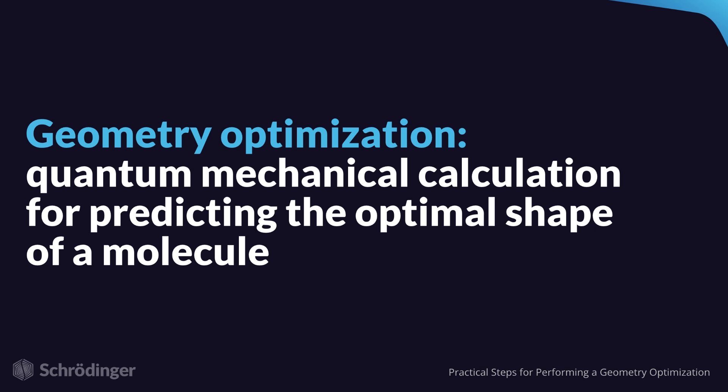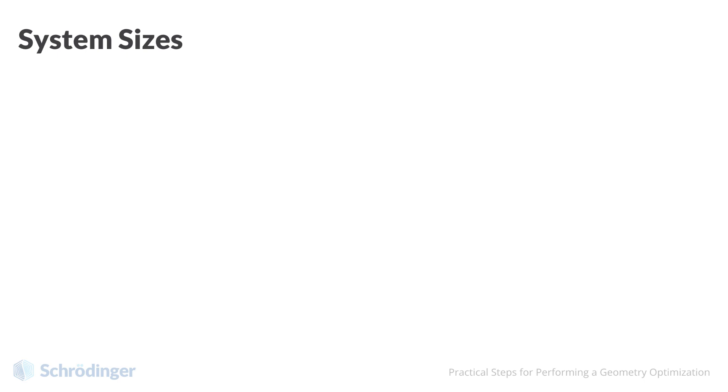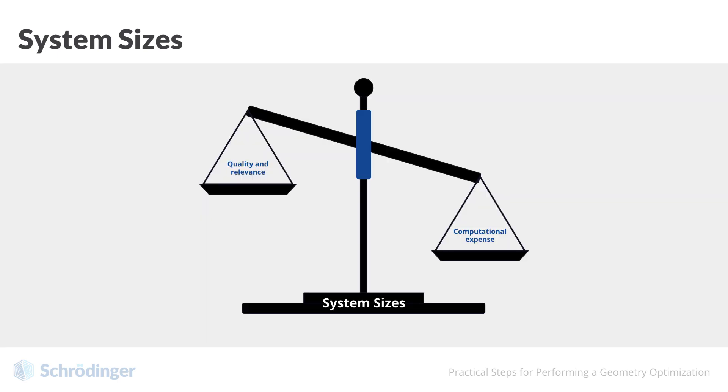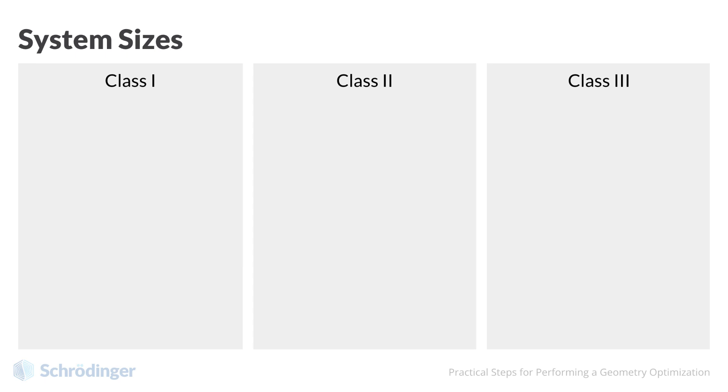Let us begin with an important practical consideration, that is, the size of the system. When we think about system size, we are typically balancing two factors: the computational expense, meaning the time and resources needed to perform the calculation, versus the quality and relevance of the results, meaning how well you can trust the output geometry and the accompanying properties. Broadly, we can categorize system sizes into three classes.